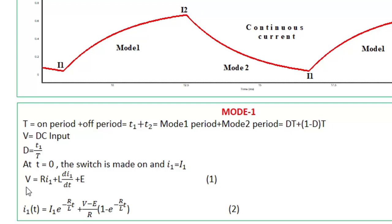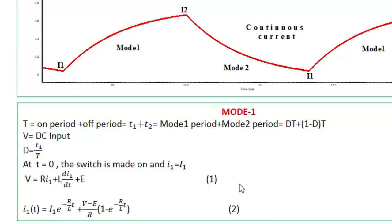Solving the KVL equation V = Ri₁ + L·(di₁/dt) + E gives the Mode 1 current expression: i₁(t) = I₁·e^(−R/L·t) + (V−E)/R·(1 − e^(−R/L·t)). This is the current expression for Mode 1. From this equation, when t = 0 you obtain the initial current I₁, and when t = T₁ you obtain the final current I₂.